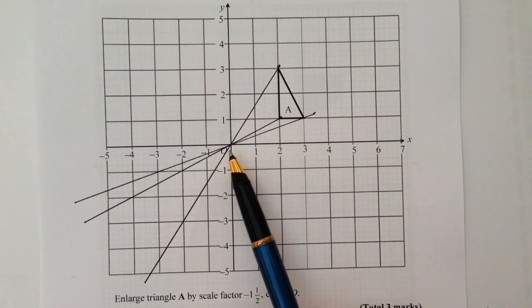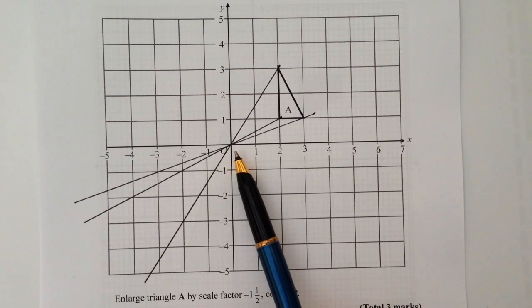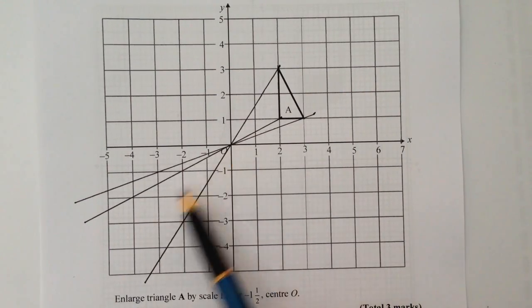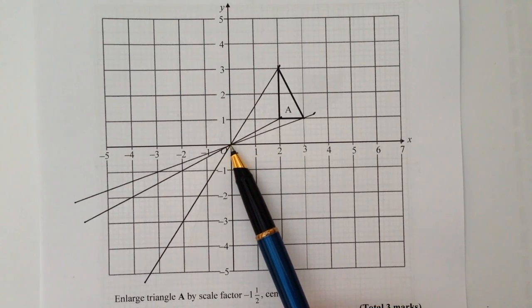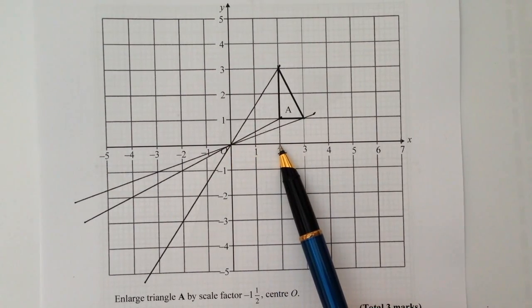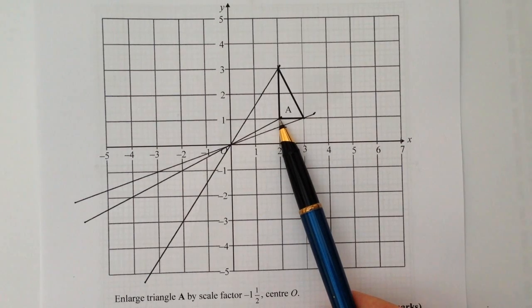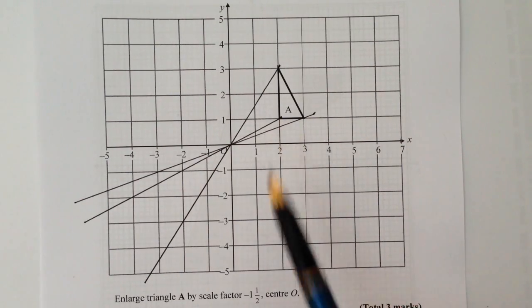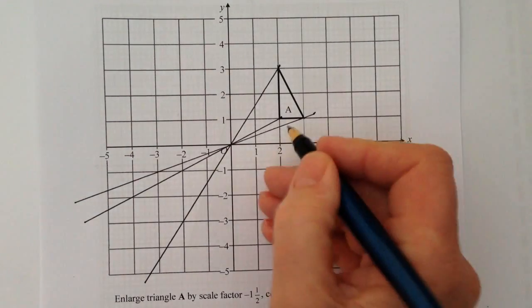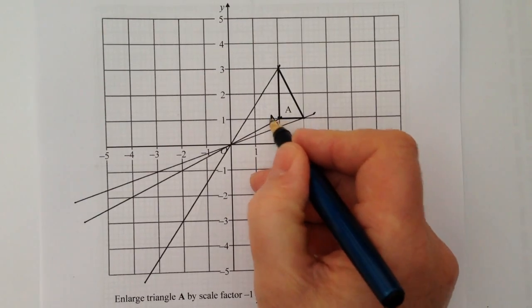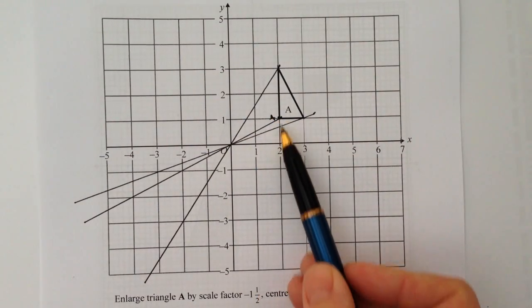So the first thing I do is from the centre of enlargement I'm enlarging by a scale factor of one and a half, but it's minus one and a half so it's in the opposite direction. So first thing is I go along two and up one to this particular point here. So if you like I'm going to call this point, let's call it just A.